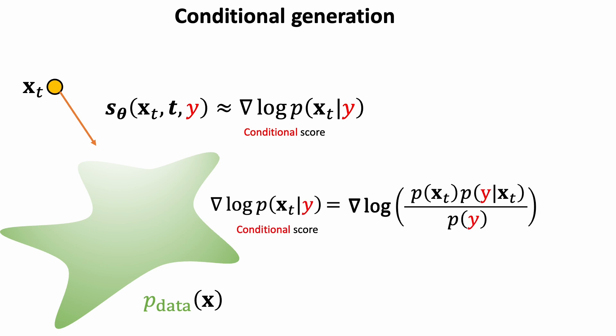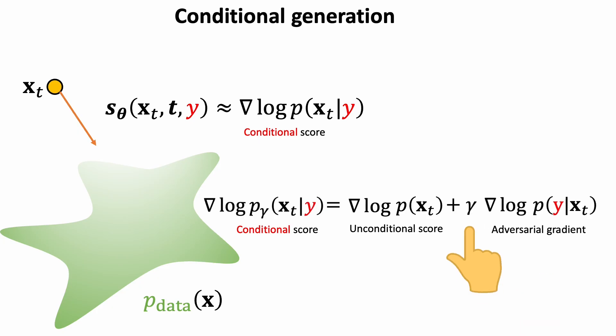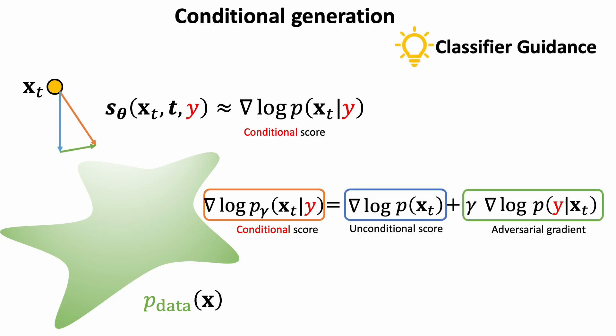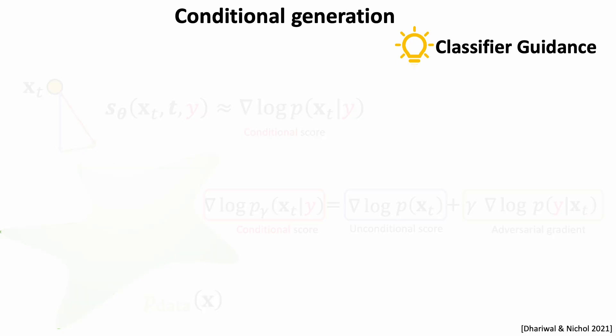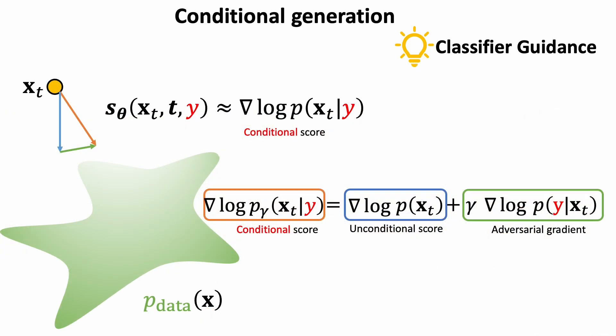By applying the Bayes rule, the conditional score consists of unconditional score and an adversarial gradient of a classifier. We can scale the adversarial gradient by a positive factor gamma. This is great because we can reuse the unconditional model, and use an additional classifier to guide the generation. We call this classifier guidance. But we will have to train another classifier, because an off-the-shelf classifier is usually trained with clean images.